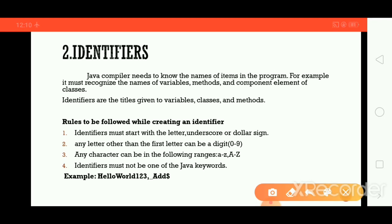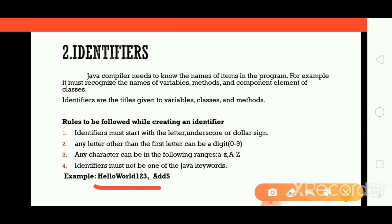Any letter other than the first letter can be a digit. Any character can be in the following ranges: a to z lowercase, A to Z uppercase. Identifiers must not be one of the Java keywords. In our example identifiers start with a capital letter — you can start with any character, lowercase or uppercase. You can also use underscore or a dollar sign at the beginning.